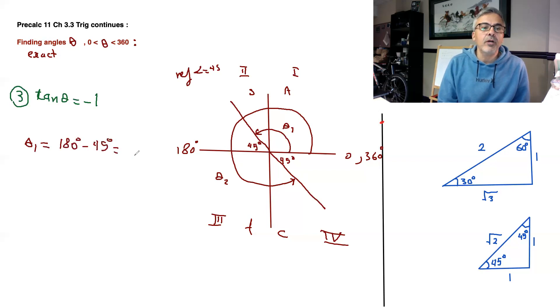So that's your theta 1. Theta 2 is, you're going to go all the way to 360, take away the 45. So 360 degrees minus 45 degrees equals 315 degrees.